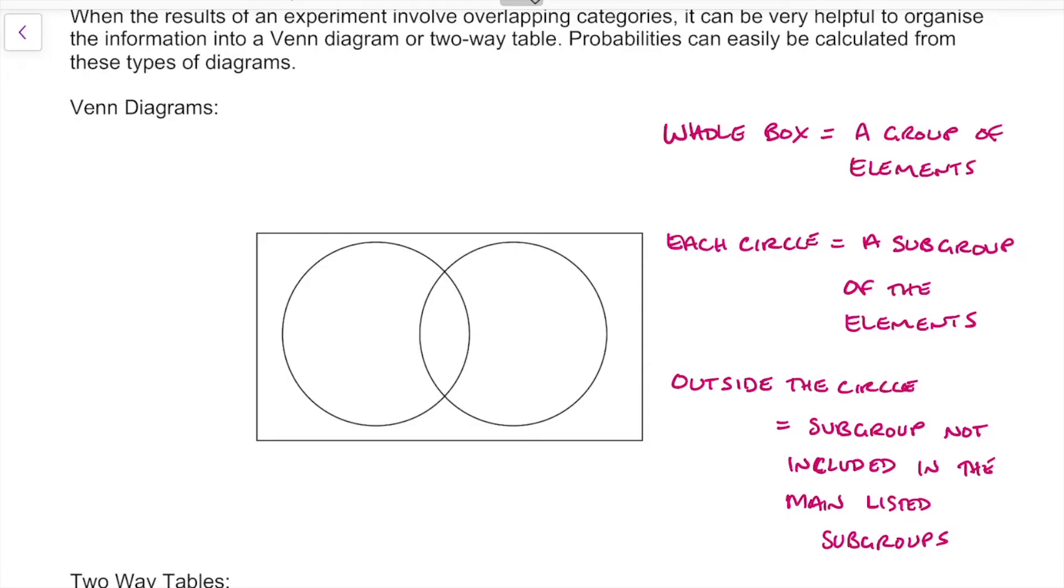Because occasionally these subgroups, there could be more than two of them, there can be three of them. Generally speaking, with Venn diagrams, we don't get past three.